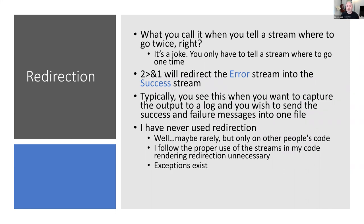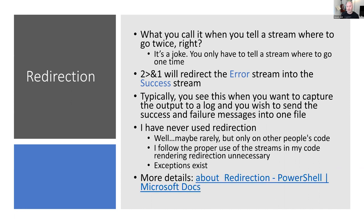Exceptions almost always exist. For example, 'git --version' actually outputs to the error stream, so if you want to capture it in a script log, you'll need to redirect the error stream. If you want to know more about redirection, search 'about_Redirection PowerShell' in Microsoft Docs — this presentation will be online with clickable links.